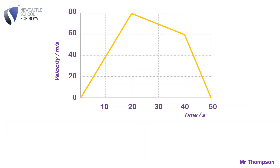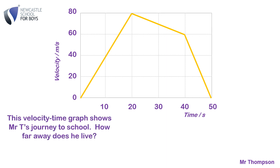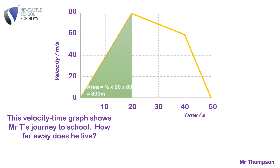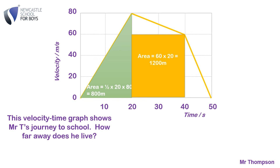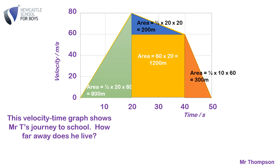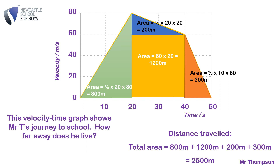Let's do one more example — Mr. T's journey to school. You work out the area in triangles and rectangles. The first triangle: half of 20 times 80 is 800. The rectangle: 60 times 20 is 1,200. The next triangle: half of 20 times 20 is 200. Adding all the areas together gives the total distance traveled: 2,500 meters.